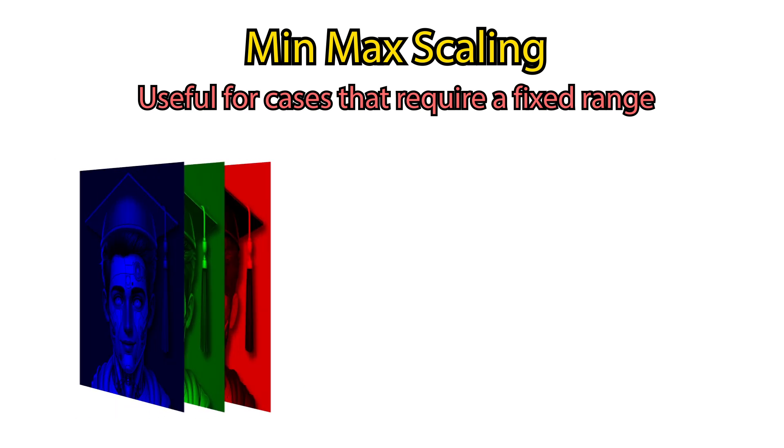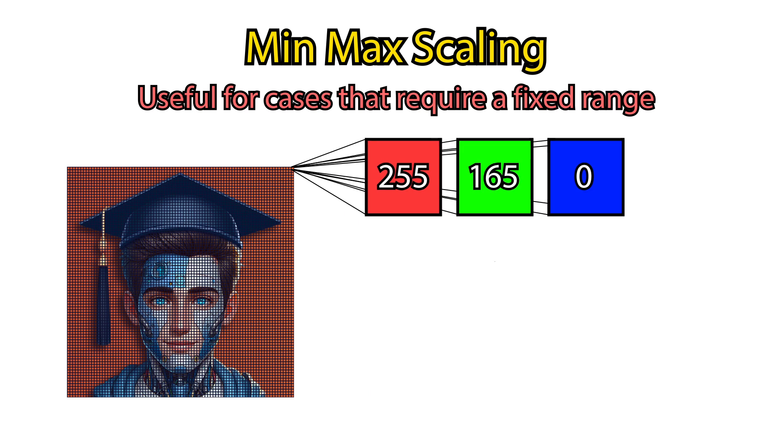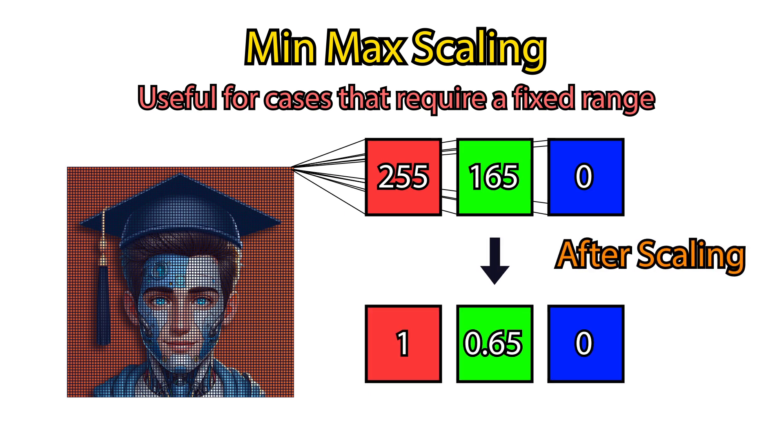For instance, RGB images consist of pixels that range from 0 to 255. By scaling it from 0 to 1, you maintain a consistent scale across all pixel values.